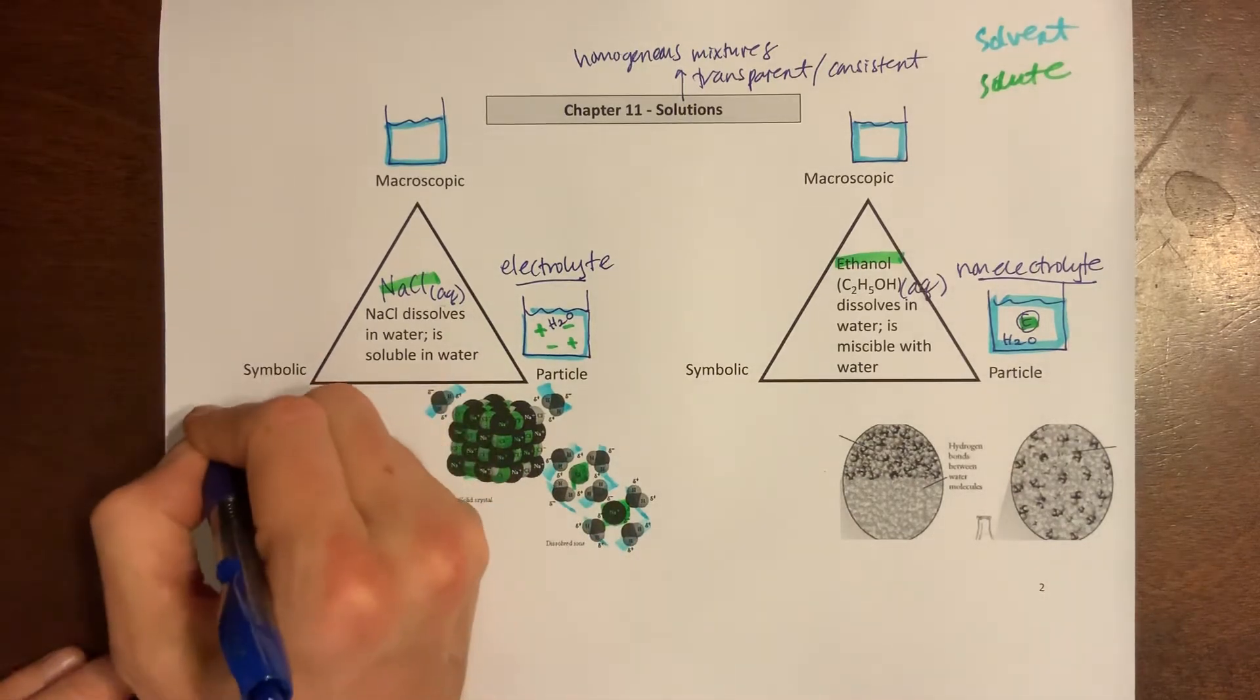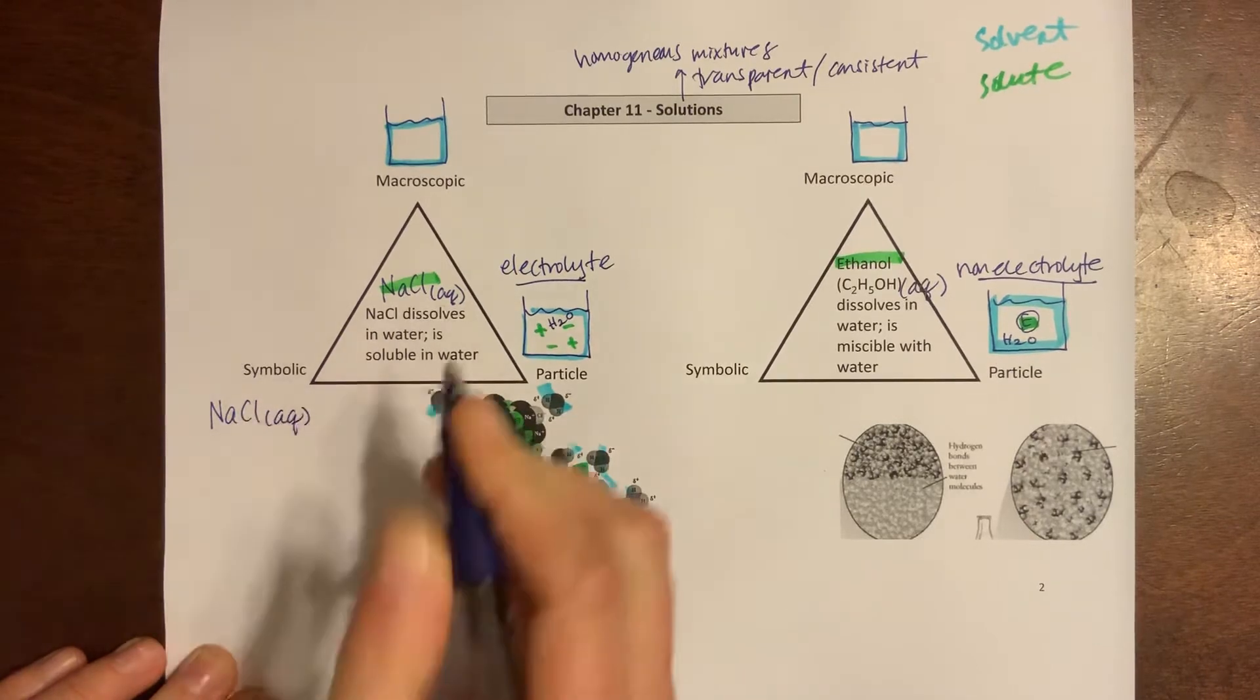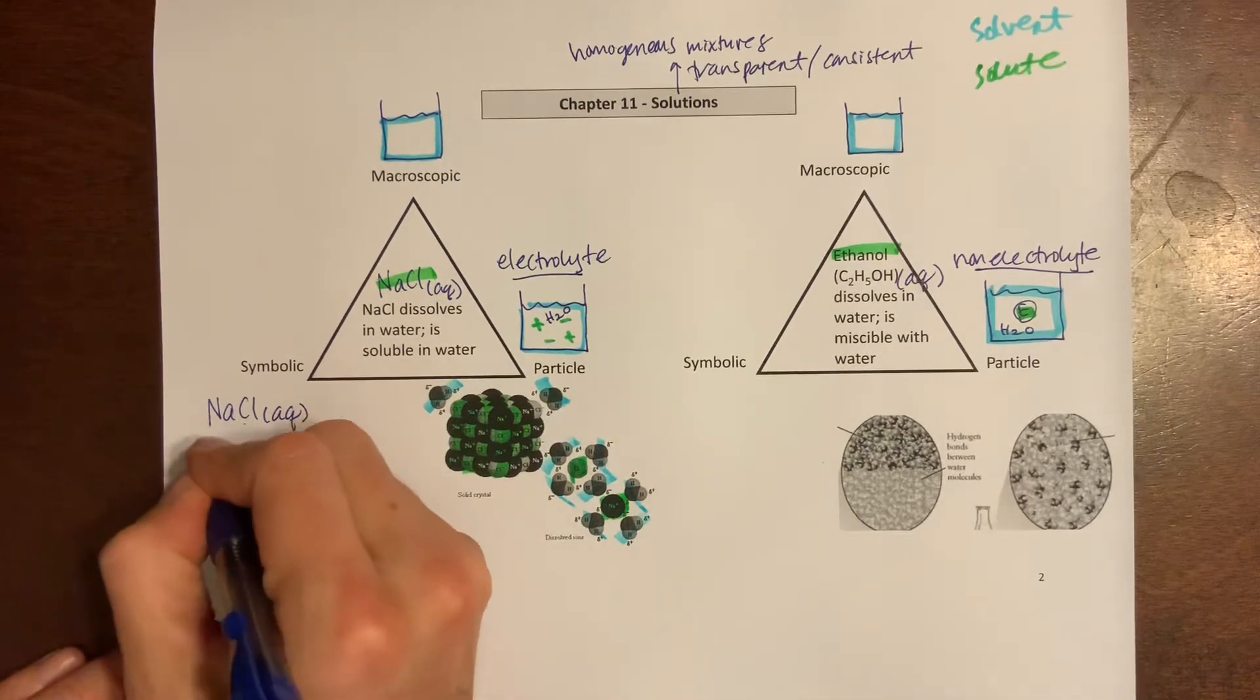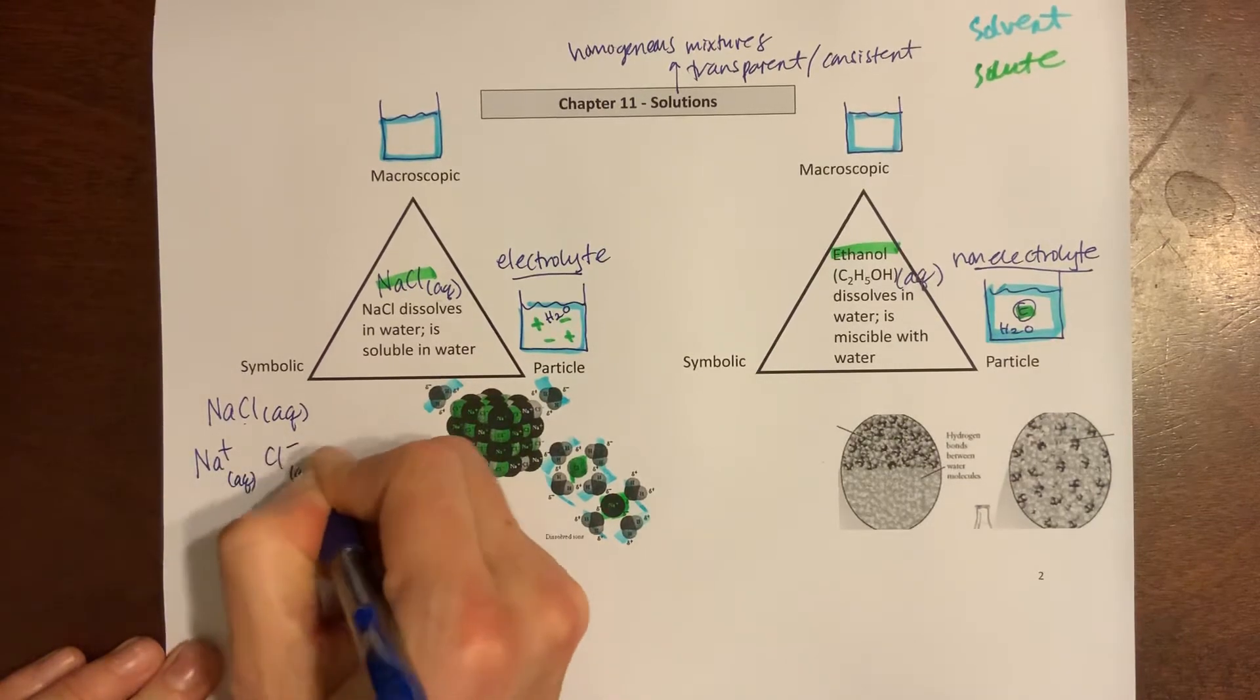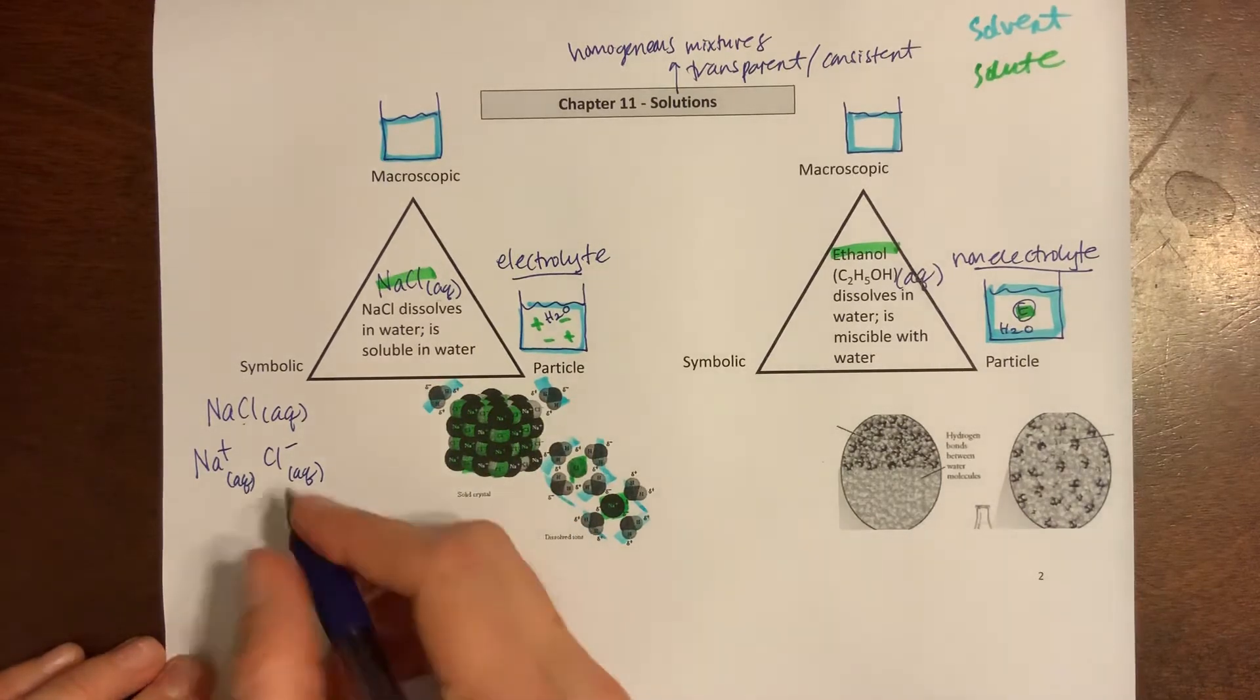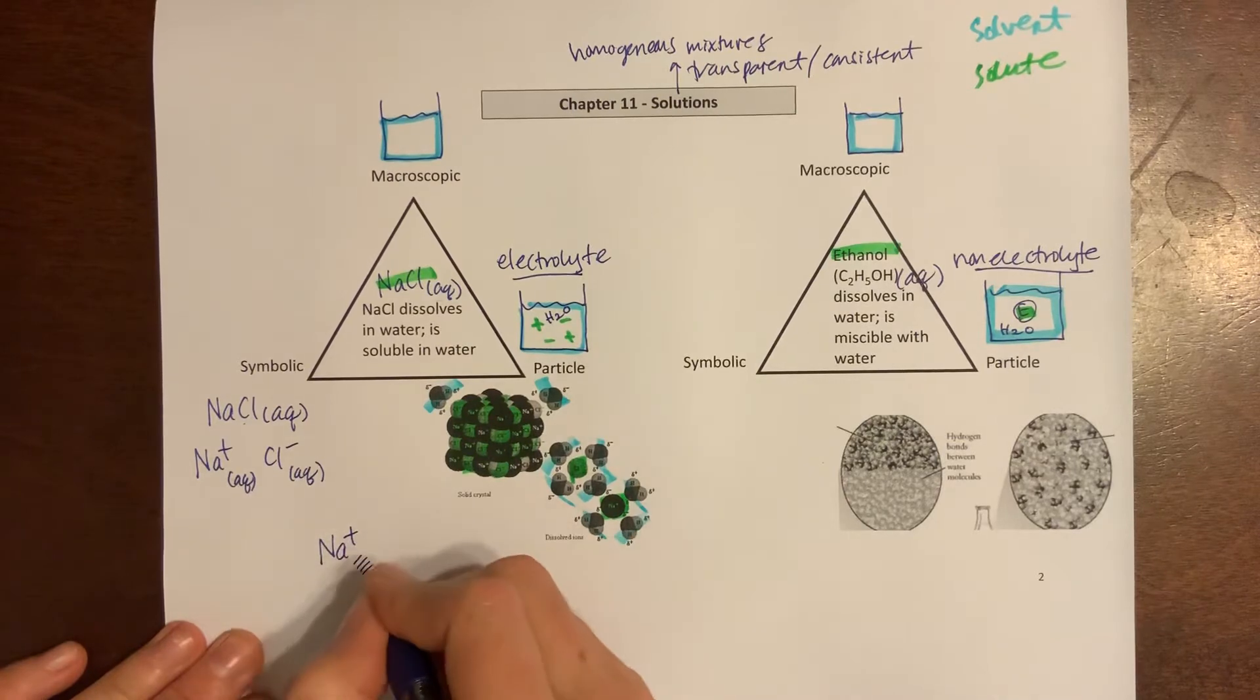Waters pull the ions out. If I can write this in a couple different ways, it's good to know your synonyms. I could write NaCl aqueous. If you remember back to Chapter 5, aqueous told me that I could also split this up into ions, right? So aqueous sodium ions, aqueous chloride ions.